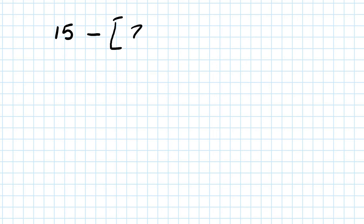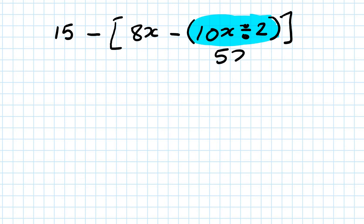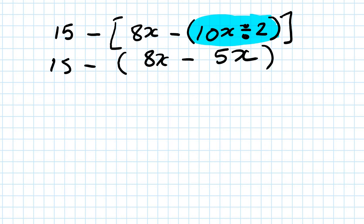Next one: 15 minus bracket 8x minus bracket 10x divided by 2. It's a little complicated with nested brackets, but just do one step at a time from inside out. Inside the inner bracket first: 10 divided by 2 is 5, so left with 5x. Now inside the outer bracket: 8x minus 5x is 3x. So 15 minus 3x — your answer is 3x. Very simple, just follow the process.